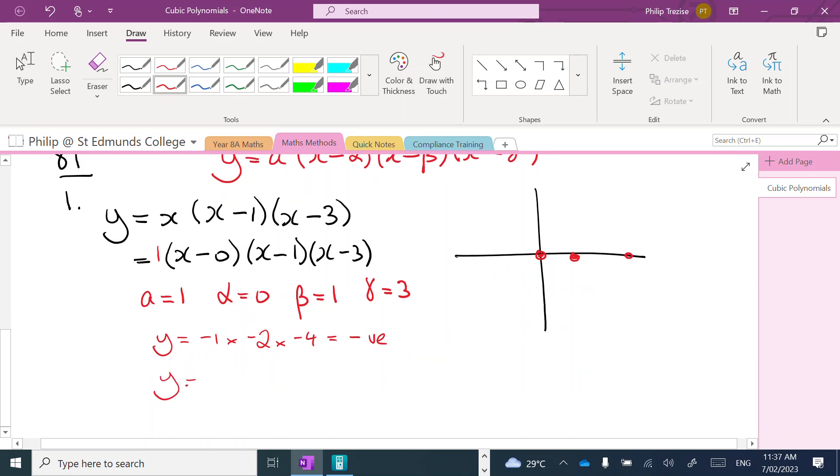So on the left of the origin, the graph is below the x-axis. If I pick a value between these two roots, between 0 and 1, say a value of 1/2, substituting into the original, then I'd have 1/2, then 1/2 - 1, that's -1/2, and then 1/2 - 3 is -2.5. Again, I don't really care what the value comes to, but I have a negative by a negative by a positive, so this would be a positive value. So between the first two roots here, the graph is positive.